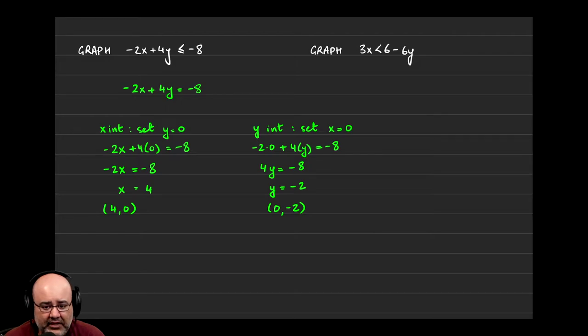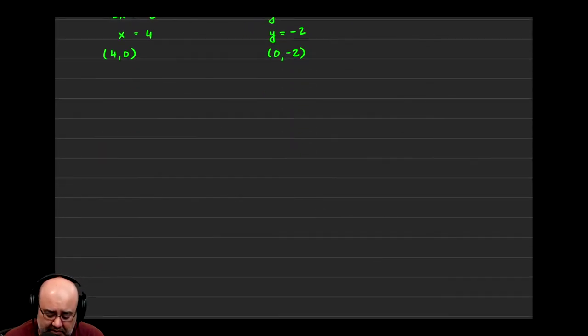So now that we have two points, we can draw a line by connecting the two of them. So let's graph this roughly. 1, 2, 3, 4, 5...